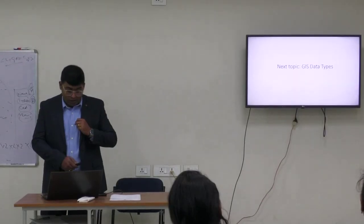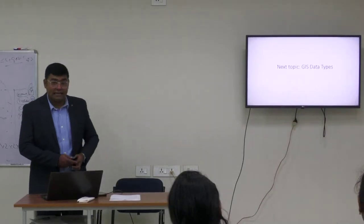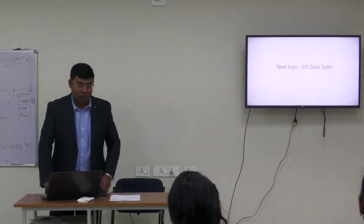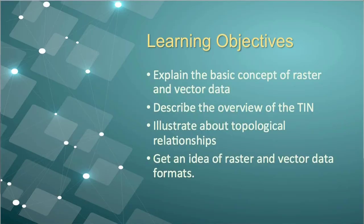Next, we will cover GIS data types where we are going to discuss about topology and related concepts. The learning objectives are to explain the basic concepts of raster and vector data, describe the overview of TIN — triangulated irregular network — and illustrate the topological relationship as already mentioned in the previous section.